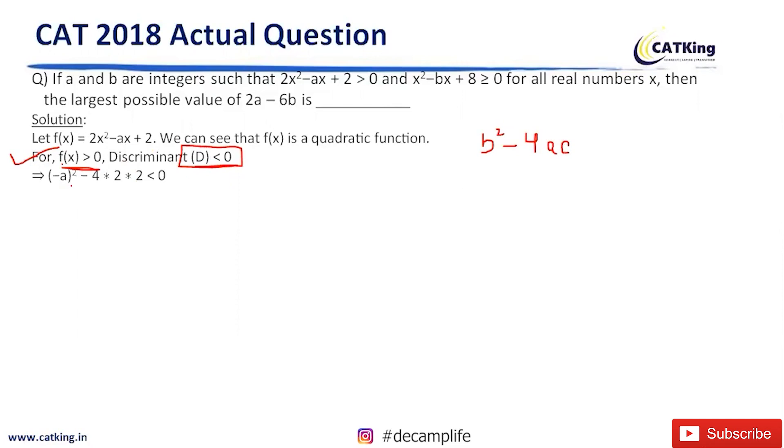Now, this is b. What is b over here? -a. So (-a)² - 4 times of a and c. A is this and c is this, which is less than 0.